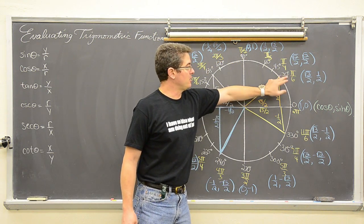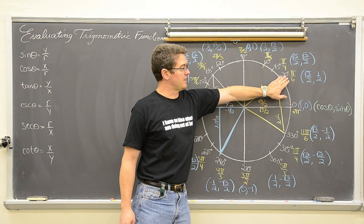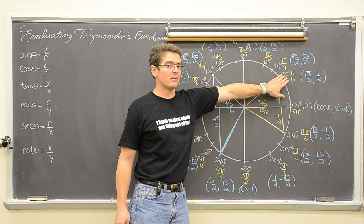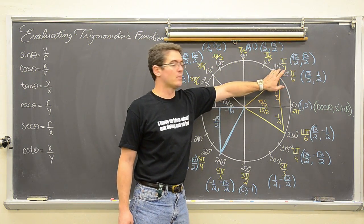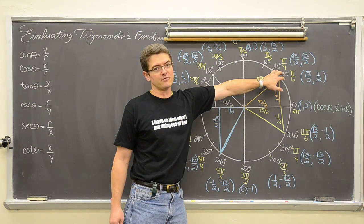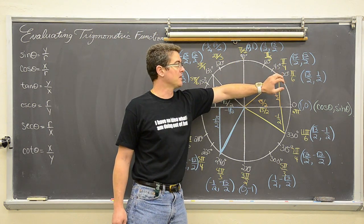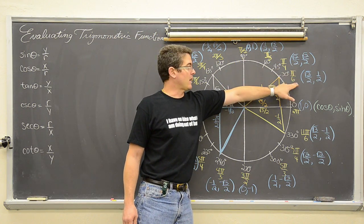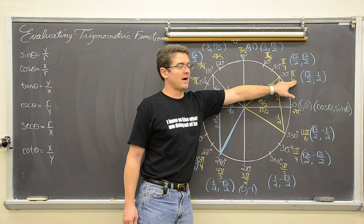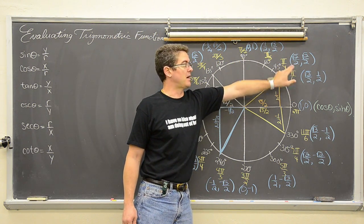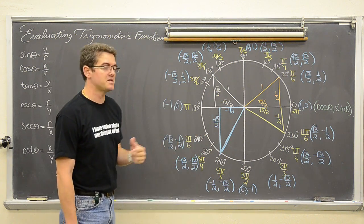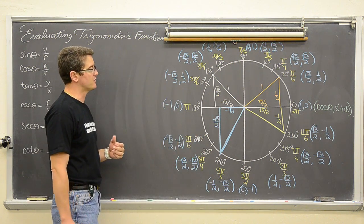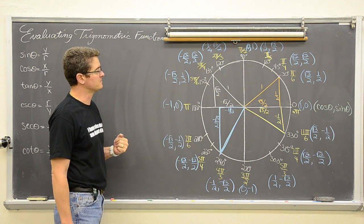When you set up your unit circle, don't forget that you count all the way around by 30 degrees and then all the way around using 45 degrees. Or, if you are doing radians, pi over 6 and pi over 4. That will give you all 16 angles that you need for the unit circle.